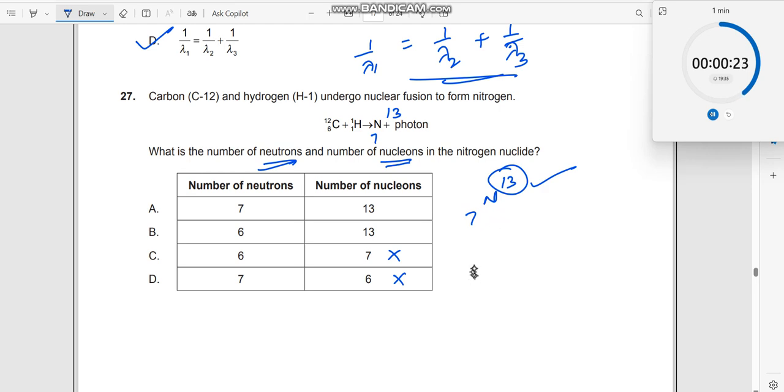Number of neutrons, how do you find? This is your number of protons. We know that protons plus neutrons equal to number of nucleons. So therefore, if this is 7 plus N is equal to 13, N should be equal to 13 minus 7, which is equal to 6.